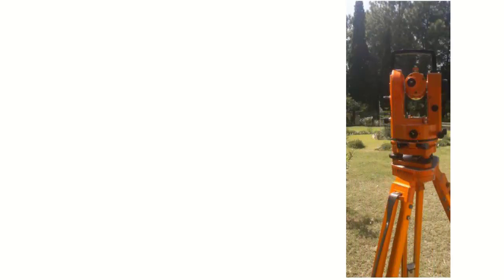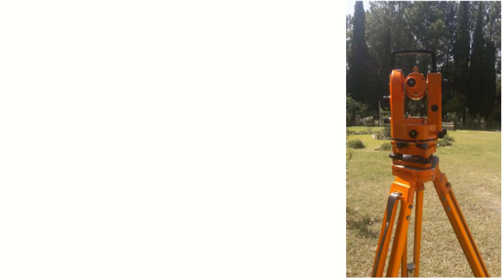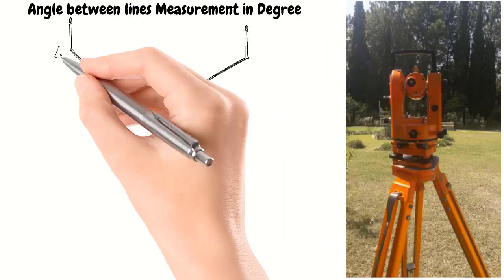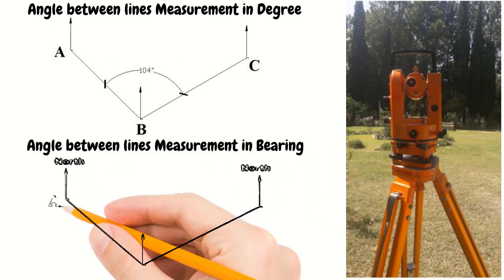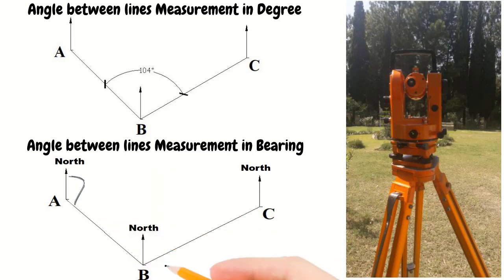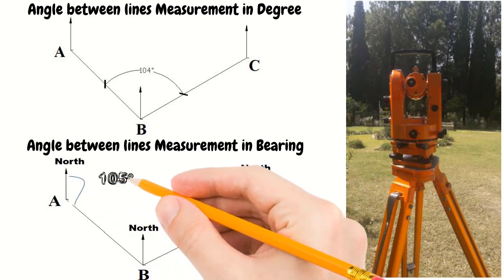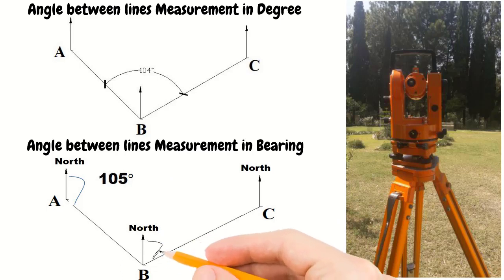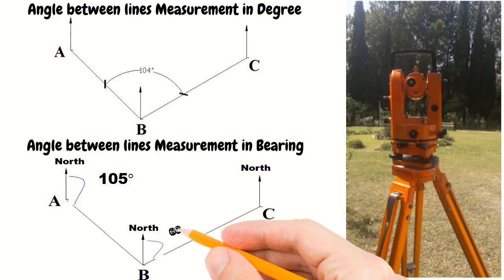Hi, welcome back. Today I will discuss an interesting topic related to theodolite traversing. In theodolite traversing in the field, sometimes the measurement between two lines is taken as an angle and sometimes as a bearing. You can find out the bearing from the measured angle or the angle from the measured bearing. Today I will show you how to find out the bearing of a line from the included angle between two lines.